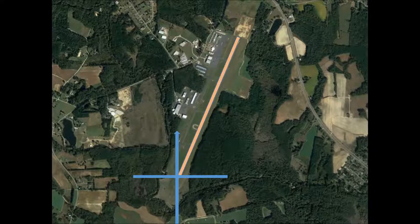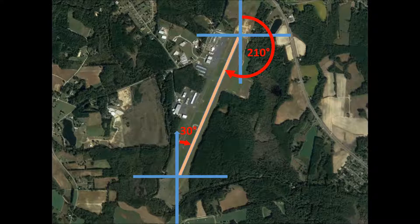We'll look at this runway in particular, starting at one end. An aircraft landing or taking off in this direction will be based on its angle from north — this is a 30-degree angle. The other side of the runway will similarly be the angle from north in the clockwise direction, and it will be 210 degrees. With any straight line, these angles will vary by 180 degrees, so there will always be a difference of 180 degrees.